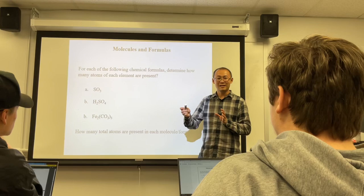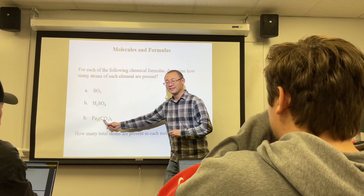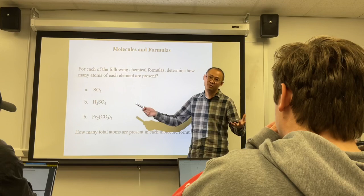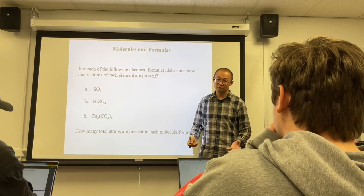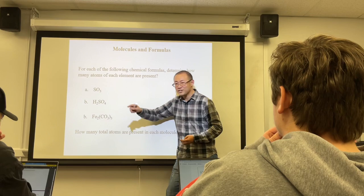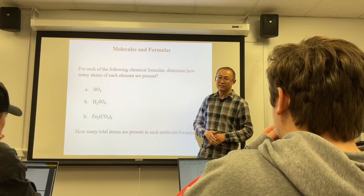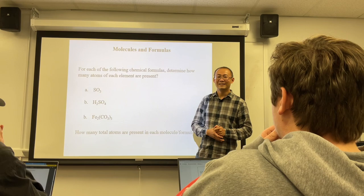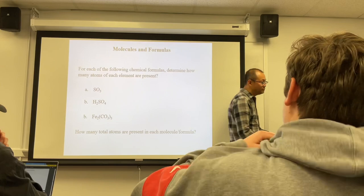If you have a number outside parentheses, it means that many of whatever is inside the parentheses. For Fe₂(CO₃)₃: two iron, three carbon (3 × 1), and nine oxygen (3 × 3) — fourteen atoms total. We'll see this more. Next, after studying these compounds, we're going to learn how to name them.